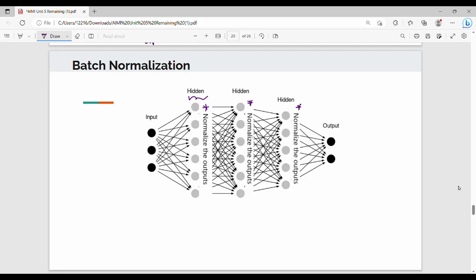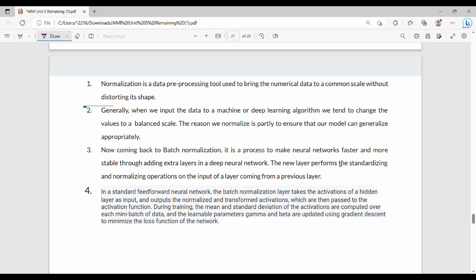Batch is a subset of training data. If training data has 100 rows and batch size is 32 or 64, generally in powers of 2, then we apply normalization on batches of 32. Normalization is a data pre-processing tool used to bring numerical data to a common scale without changing the distribution shape.